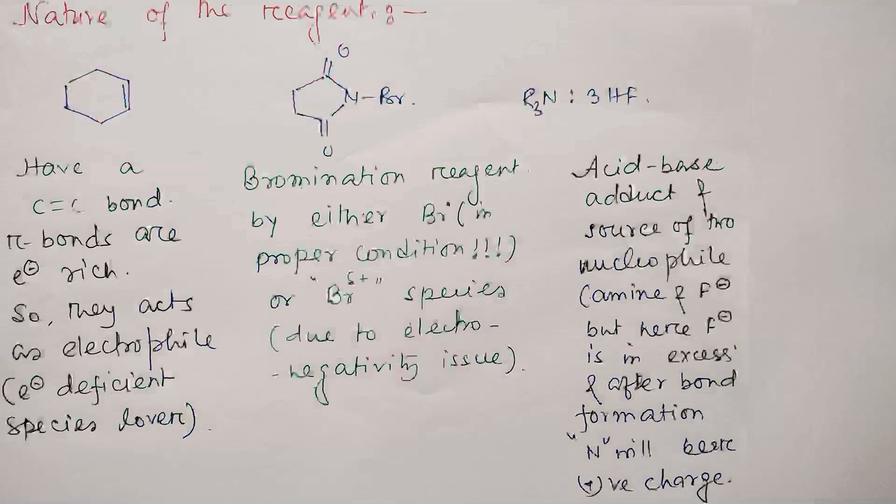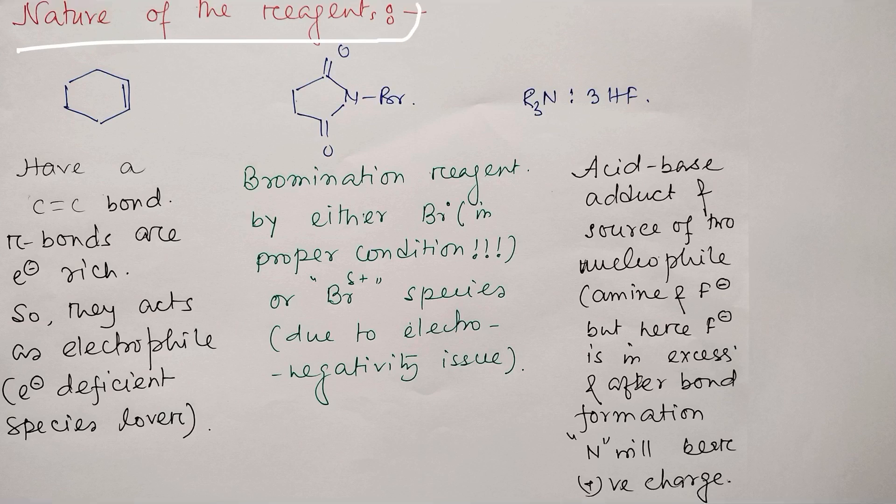As usual, I first explain about the nature of the reagent because it is essential. If you understand the nature of reagent, any type of reaction you can predict what will be the expected product. First of all, this is an alkene, so in this case the alkene has a C-C bond.